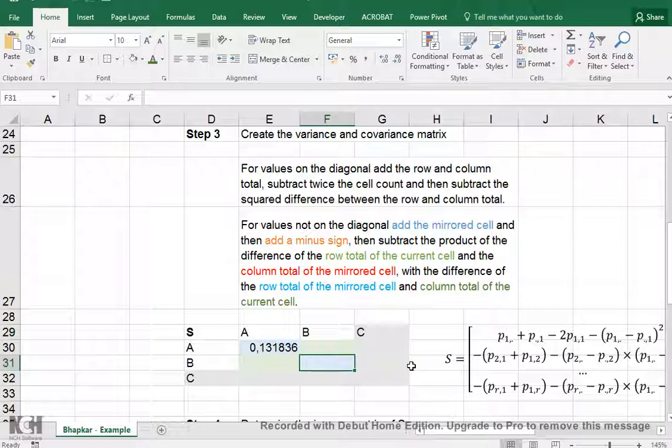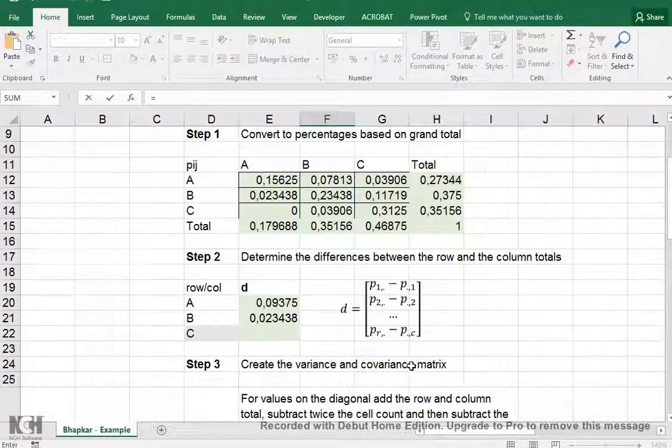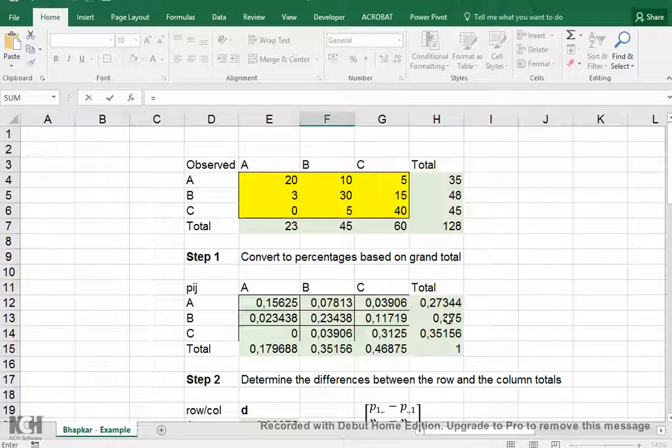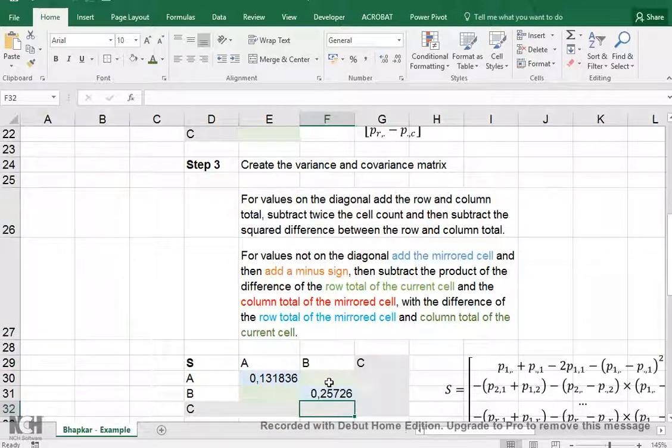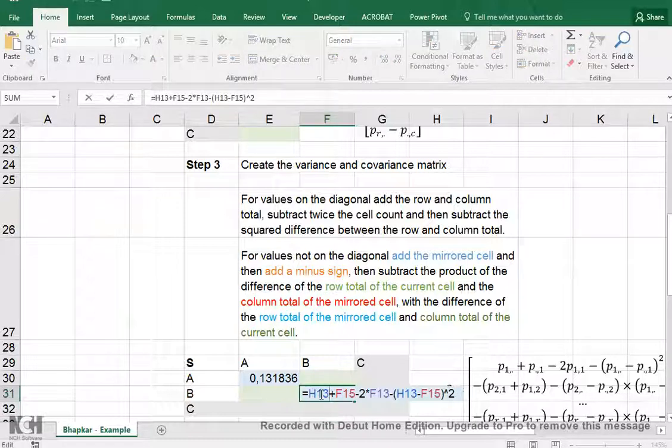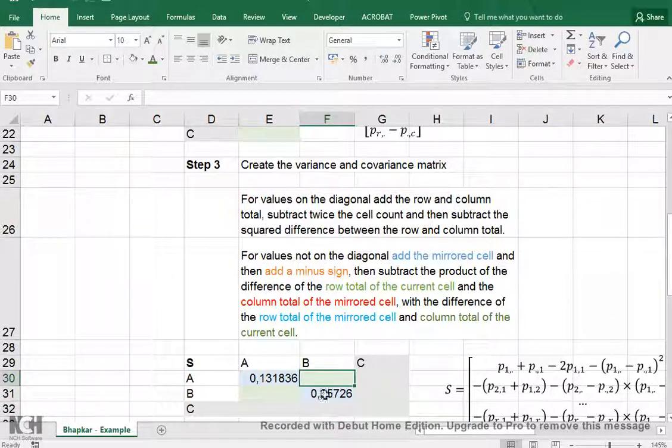For this one, the same thing. So we actually add, for BB, we add the row total of B plus the column total of B, and then we subtract twice the cell count, which was this one, and we subtract the difference between the row total and the column total squared. So it looks like this in the end. Now, again, we don't need to be concerned with the third one, because we have one degrees of freedom.